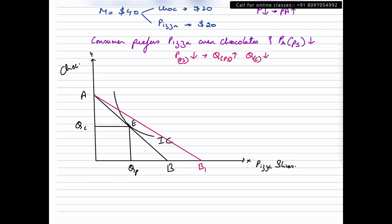That means a consumer may be at equilibrium somewhere around here. Let us say this is IC1 and this is equilibrium 1 and probably this is the quantity of pizza slices Q1. And this is the quantity of chocolates. So we can see that he's reduced his quantity of chocolates and increased his quantity of pizza slices. Why? Because pizza slices were comparatively cheaper and he preferred pizza over chocolates.